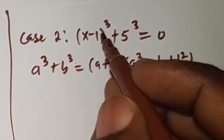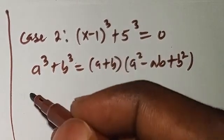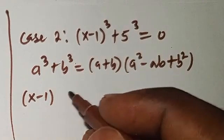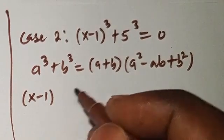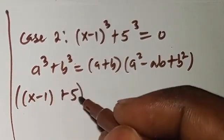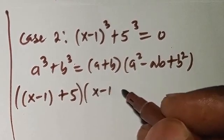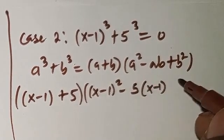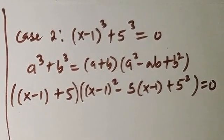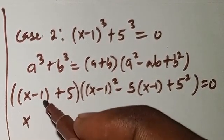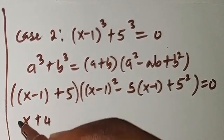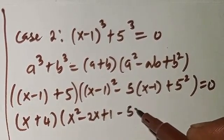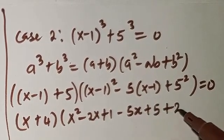So we're going to apply that. We have x minus 1 to the power of 3 with x minus 1 as a. We're going to have x minus 1 plus 5, times x minus 1 all squared minus 5 times x minus 1 plus 5 squared, equals 0.